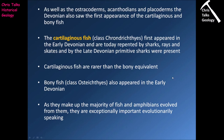As well as the ostracoderms, acanthodines, and placoderms, the Devonian also saw the first appearance of cartilaginous and bony fish. The cartilaginous fish — appearing in the early Devonian and represented today by sharks, rays, and skates — had their first primitive sharks by the late Devonian. The bony fish also appeared in the early Devonian. As they make up the majority of fish and amphibians evolved from them, they are exceptionally important from an evolutionary point of view: fish give rise to amphibians, amphibians give rise to reptiles, and reptiles give rise to birds and mammals.